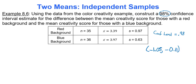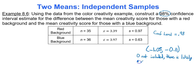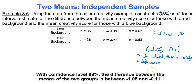The key thing about confidence intervals is that zero is not included. When that's the case, there is likely a difference in the two means — because if the difference between two things is zero, there is no difference. Since zero is not included, there is likely a difference. We can say with 98% confidence that the difference between the means of the two groups is between negative 1.05 and negative 0.11.